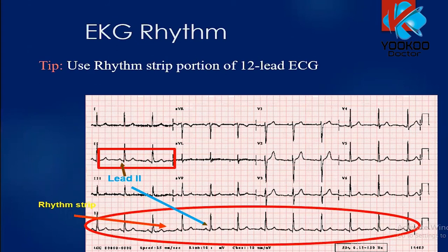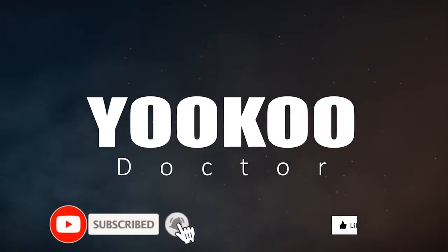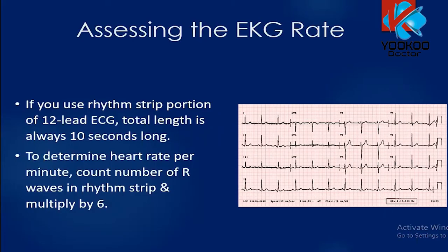Using the rhythm strip — usually taken from lead 2, but V1 can also be used — to determine the heart rate: the total length of the rhythm strip is usually 10 seconds. To determine the heart rate per minute, count the number of R waves in the rhythm strip and multiply by 6. For example, if you count 12 R waves, you multiply by 6 to get 72 beats per minute.